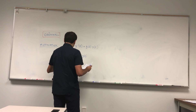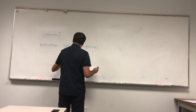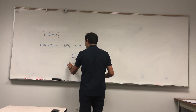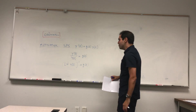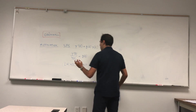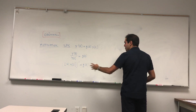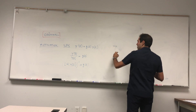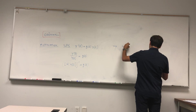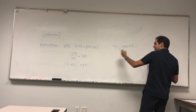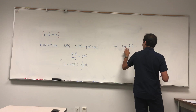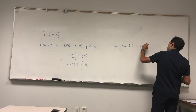Then (ln|y(t)|)' = g(t). Assuming y is positive, we can remove the absolute values. Again, this is just motivation to show you how to get the formula — the actual proof won't need those assumptions. So ln(y)' = g(t). Integrating both sides from 0 to t gives ln(y(t)) − ln(y(0)) equals the integral from 0 to t of g(s) ds.